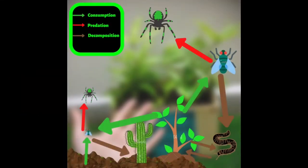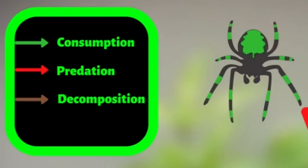This is a food web. In the key, the green arrow is for herbivores, the red is for carnivores, and the brown is for decomposers.